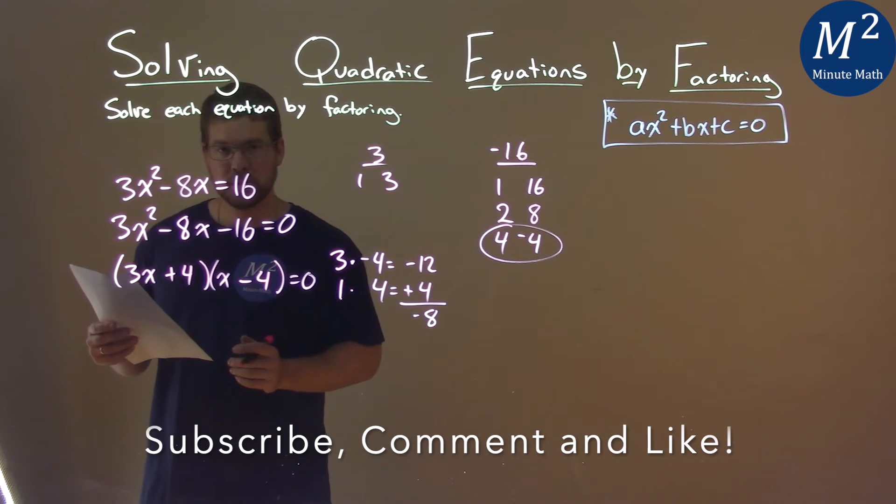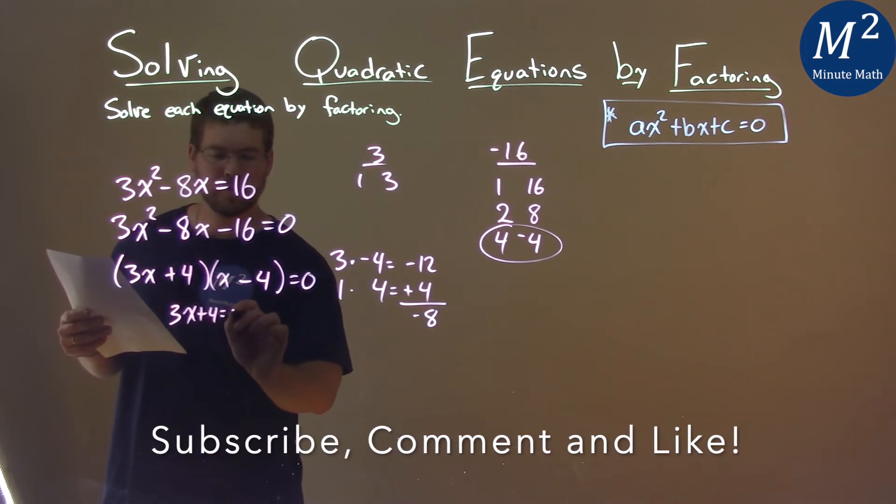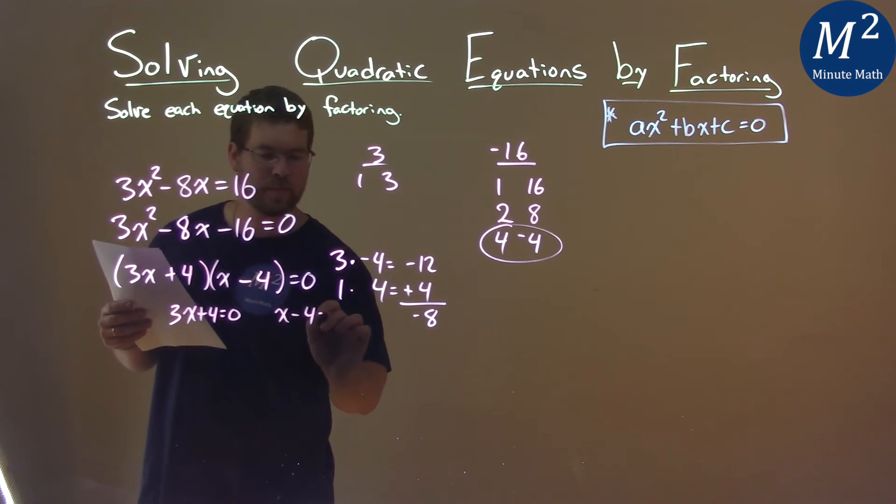We can set each part individually equal to 0. 3x plus 4 equals 0, and x minus 4 equals 0.